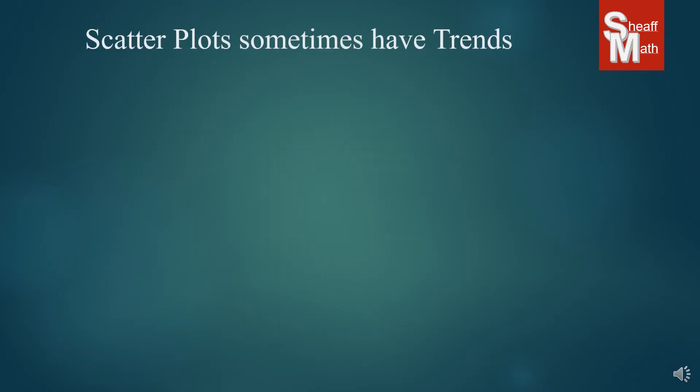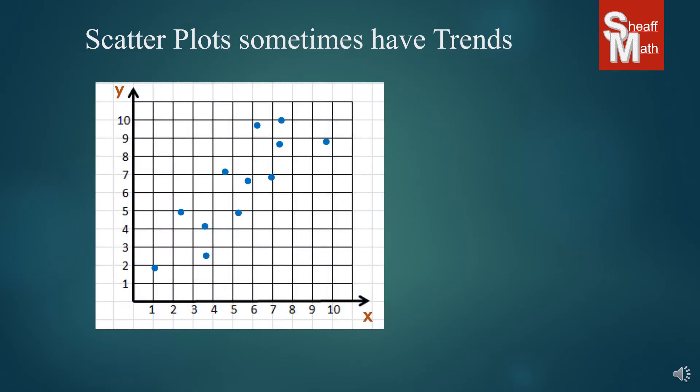Now sometimes scatterplots have trends. So let's take a look at this set of data right here, these points. And as you can see, it looks like it's kind of going up from left to right. There's some sort of pattern or trend that is going up to the right.